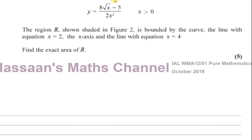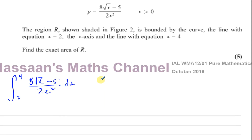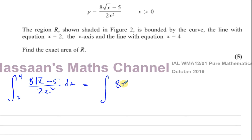We have to integrate the function between 2 and 4, where the function is 8 times root x minus 5 over 2x squared, with respect to x. To prepare it for integration, I need to split it into separate terms and write any x in index form. The square root of x is x to the power of a half.